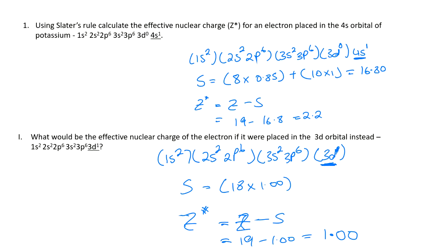So from this, the next question asks us: we've calculated the effective nuclear charge for an electron if it was the valence electron of potassium placed in the 4s orbital versus being placed in the 3d orbital. We see that if it's placed in the 4s orbital, the effective nuclear charge is higher. Does this help us to understand why when we write the electron configuration for potassium, we go 1s2, 2s2, 2p6, 3s2, 3p6, 4s1?